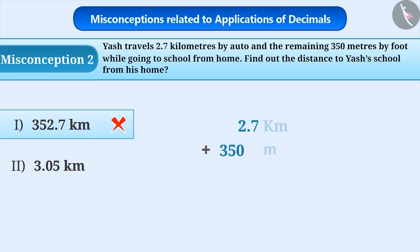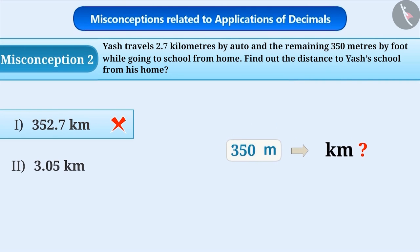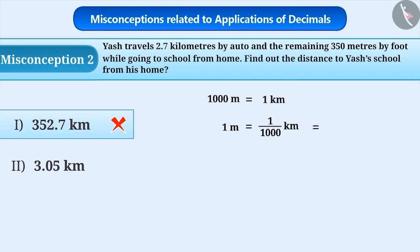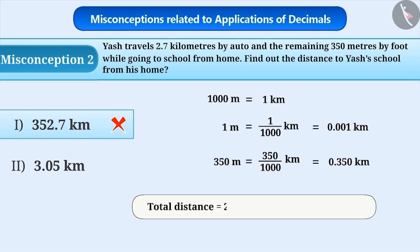The correct way to do this is that while performing any mathematical operation, it is important to take care of the units. Here, one number is given in kilometers and the other in meters. In such cases, first we need to make the units equal. We need to find the distance in kilometers, so we will convert 350 meters into kilometers. 1000 meters is equal to 1 kilometer. Therefore, 1 meter is equal to 1 by 1000 kilometers, which is 0.001 kilometers. Therefore, 350 meters equals 350 by 1000, which is equal to 0.350 kilometers. Thus, the total distance is equal to 2.7 kilometers plus 0.350 kilometers, which is equal to 3.050 kilometers.